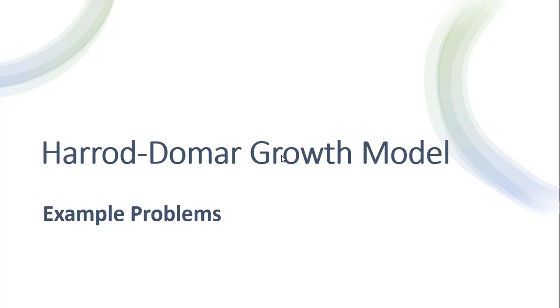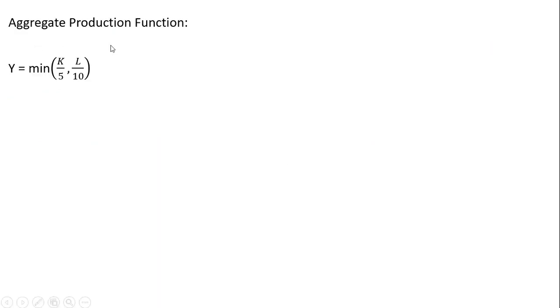Hello. In this video, we're going to do some example problems using the Harrod-Domar model. We're going to start with an aggregate production function given by the following, where real national output equals a minimum of K divided by 5 or L divided by 10.